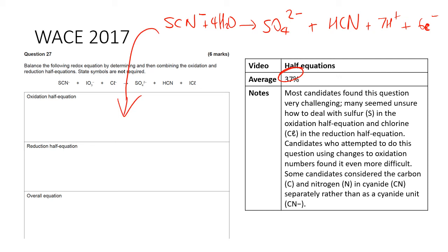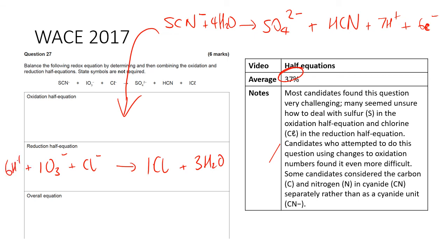Now for the reduction half-equation: IO₃⁻ is turning into ICl. This tripped up many students trying to work out individual oxidation numbers in ICl — don't worry about that. You will need Cl⁻ on the left side to balance the non-hydrogen and oxygen elements. Then add water to balance oxygen, H⁺ to balance hydrogen, and electrons to balance charge. That completes the reduction half-equation.